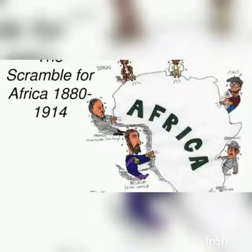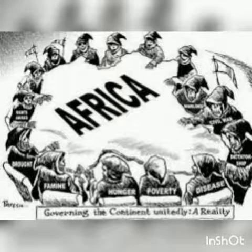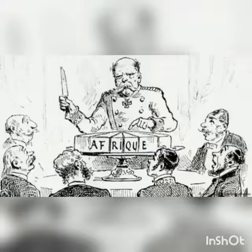The Berlin Conference was held in 1884–1885. Between 1800 and 1850, there was an industrial revolution in Europe, where new and more efficient machines were invented. The machines were able to manufacture goods in large quantities, thus creating the need for raw materials and also a larger market.